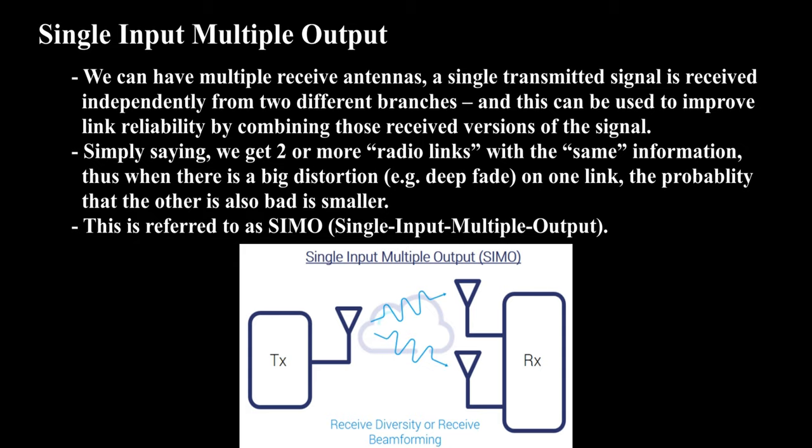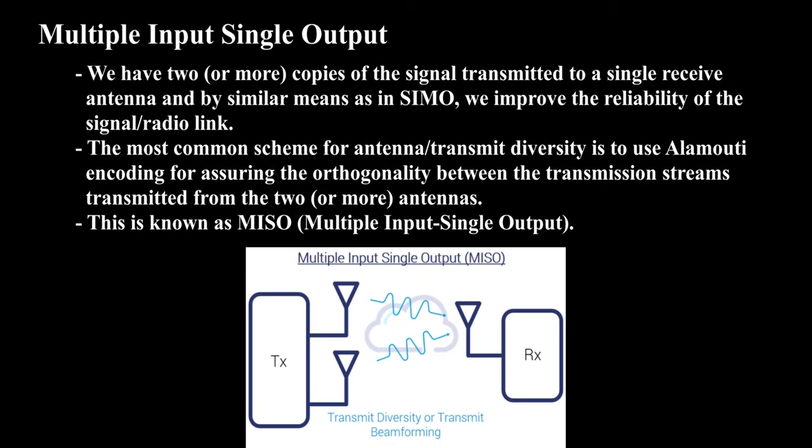Multiple Input Single Output: we have two or more copies of the signal transmitted to a single receive antenna, and by similar means as in SIMO, we improve the reliability of the signal radio link. The most common scheme for antenna transmit diversity is to use Alamouti encoding for assuring the orthogonality between the transmission streams transmitted from the two or more antennas.